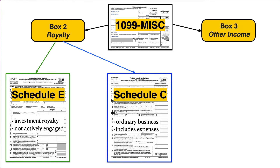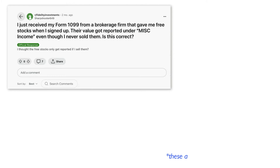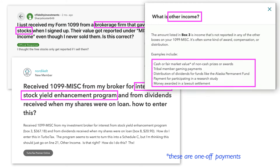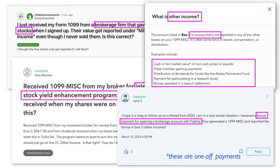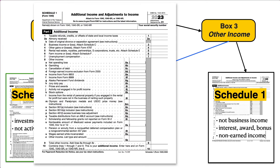Similarly, if you have other income in box 3 that relates to ordinary business operations, that would require adding a Schedule C and probably including some business expenses. However, there may be cases where other income doesn't relate to business activity, but rather to an investment, interest, or an award or bonus for opening an account. In these cases, you would not generate Schedule C but rather put it under other income on Schedule 1.